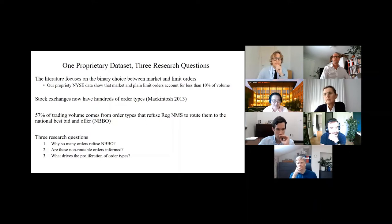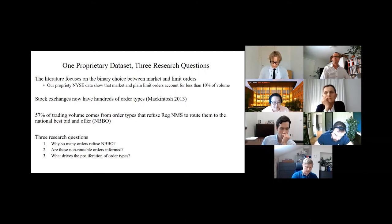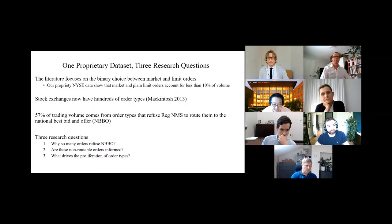Stock exchanges now have hundreds of order types. The most interesting part is 57% of trading volume comes from order types that refuse Regulation NMS to route them to the national best bid and offer. I have three research questions. Why do so many orders refuse NBBO? Are these non-routable orders informed? What drives the proliferation of order types?